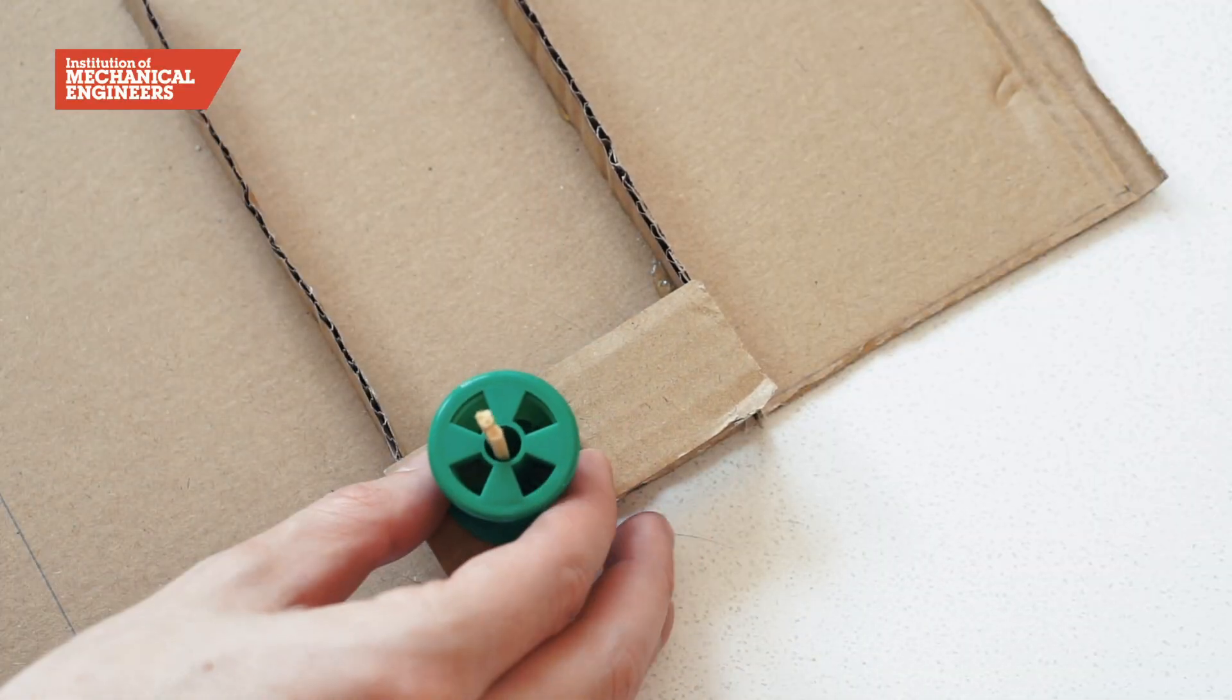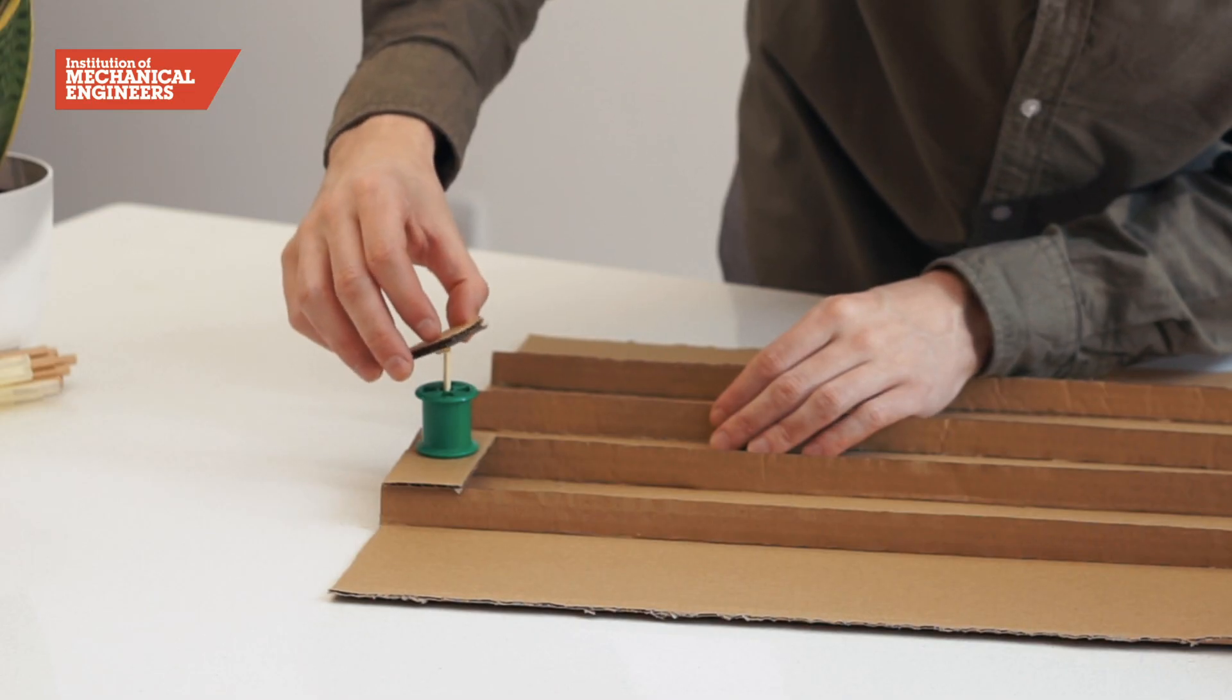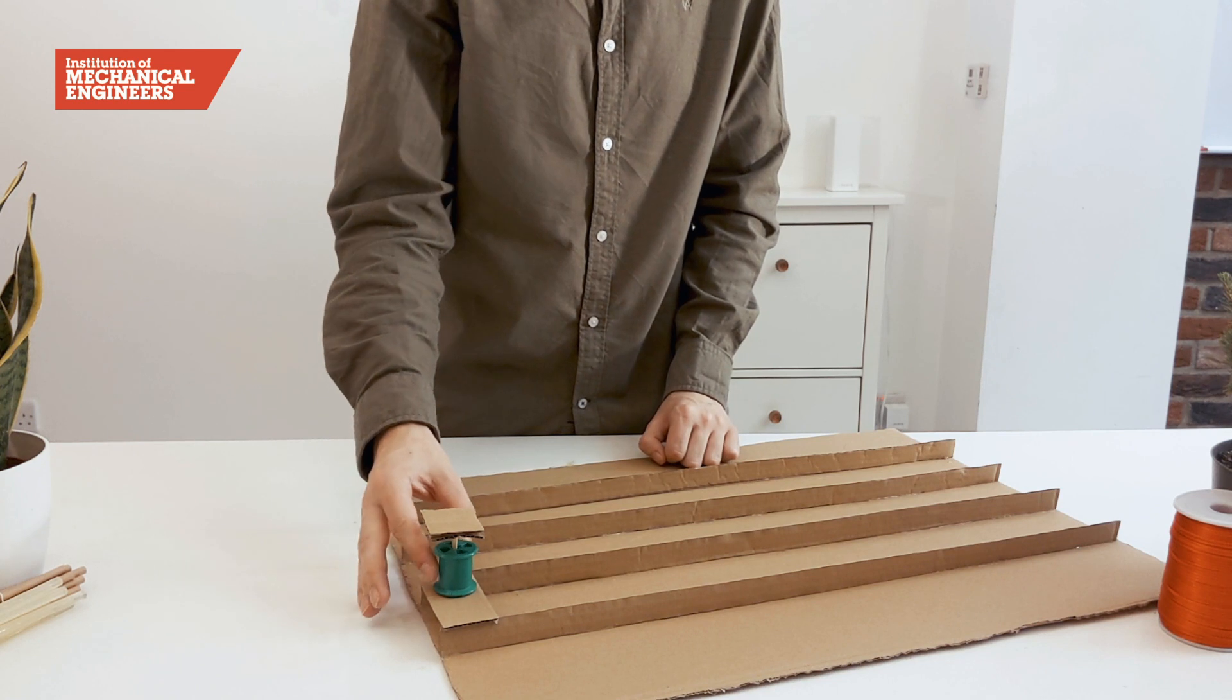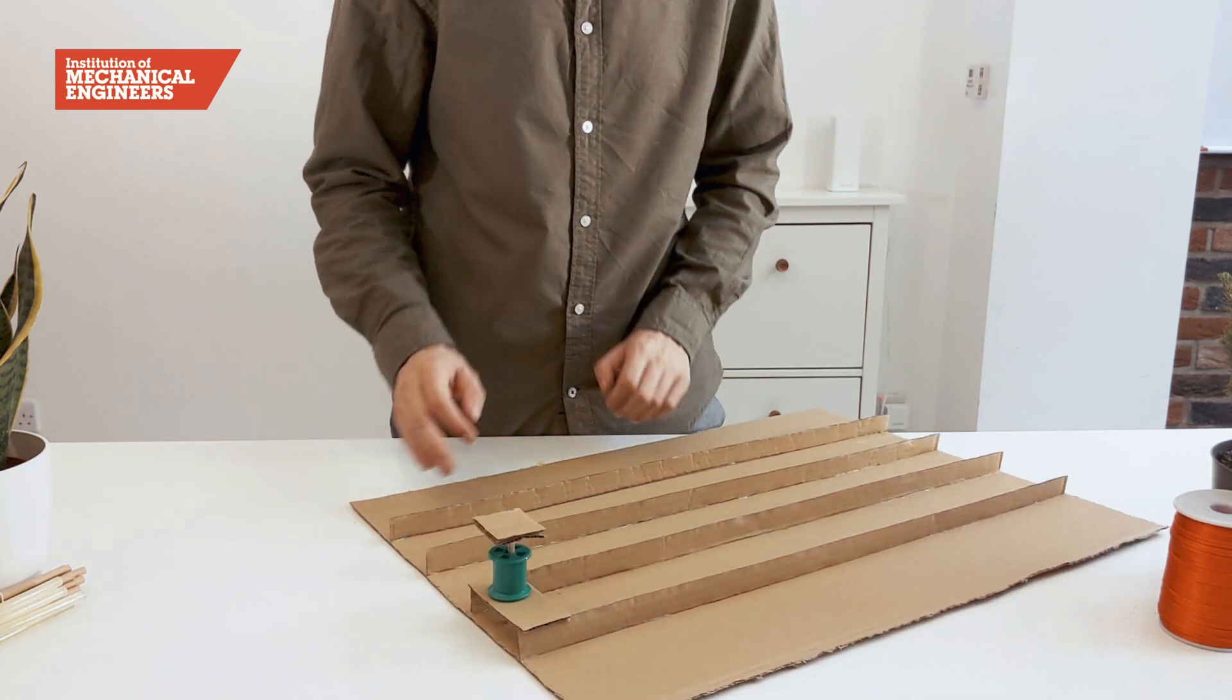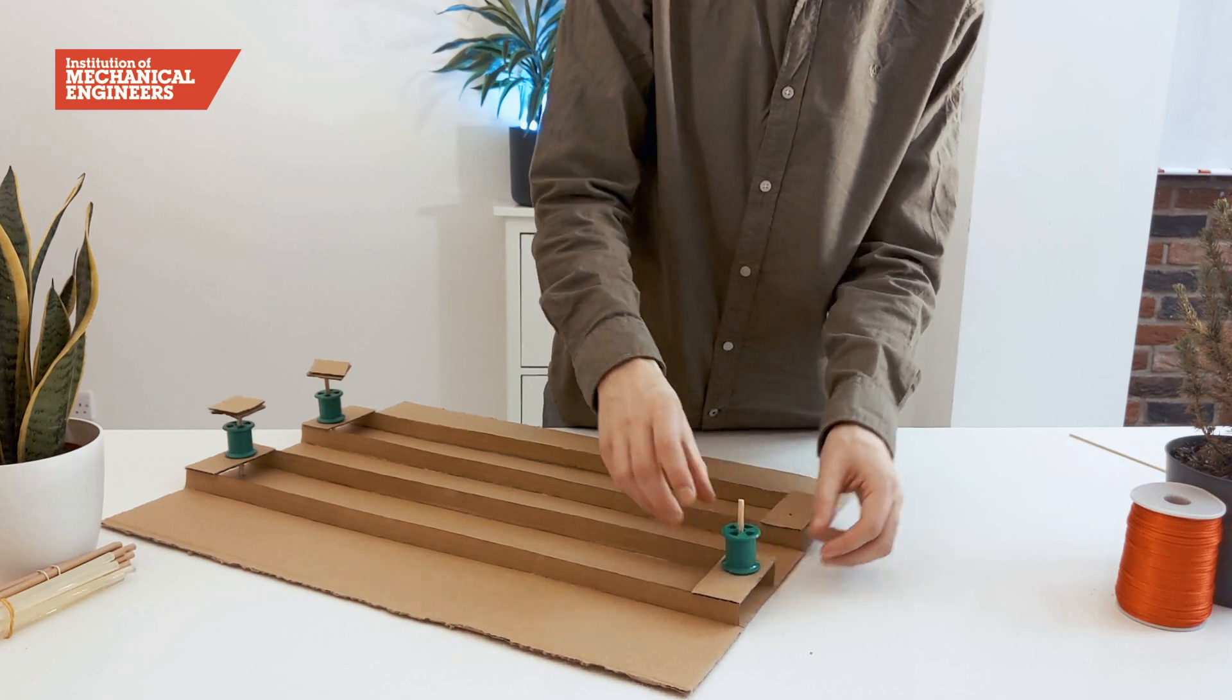We will thread the cotton reel onto the sticks and glue a small square of card over the ends so that there are no sharp points sticking out. Now repeat this step three more times for the other track ends.